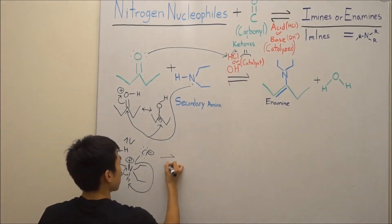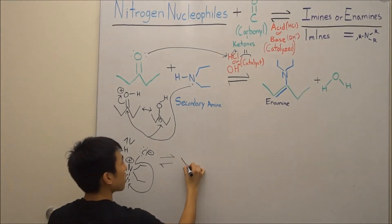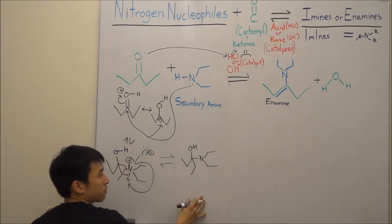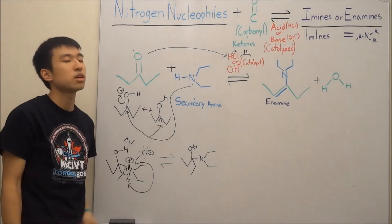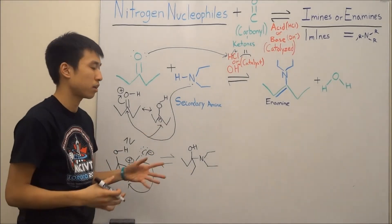So now, what you guys are going to get is basically this molecule. Alcohol is still there. Now you have a neutral nitrogen here. Nice and stable molecule. So you're a little bit stuck, because we don't know where to go from here, right?